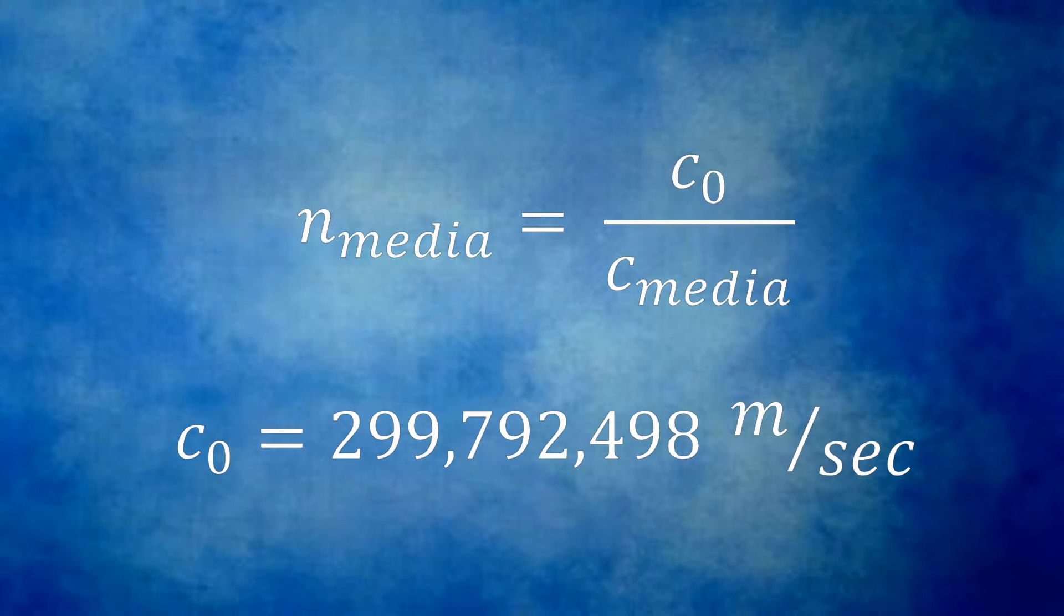The ratio of the speed of light in a vacuum, usually represented by c sub-zero, to the speed of light in the material, usually represented either by just the lowercase c or the lowercase c with some subscript, is the index of refraction. The index of refraction is conventionally represented by the lowercase n.